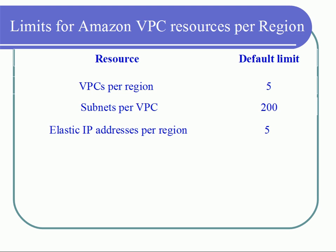By default, you will be given 5 elastic IPs. If required, you can contact AWS and increase the limits.